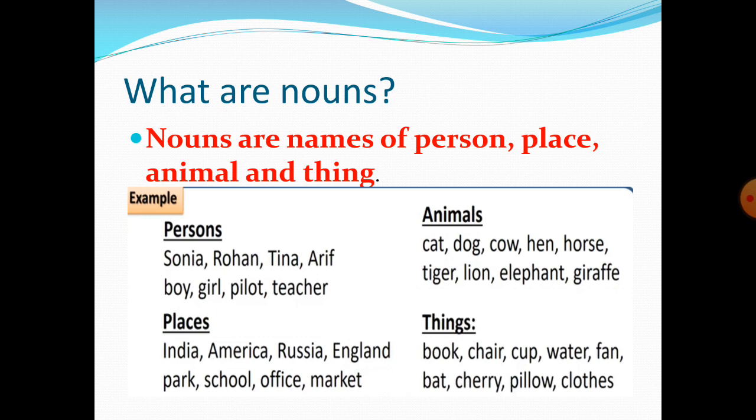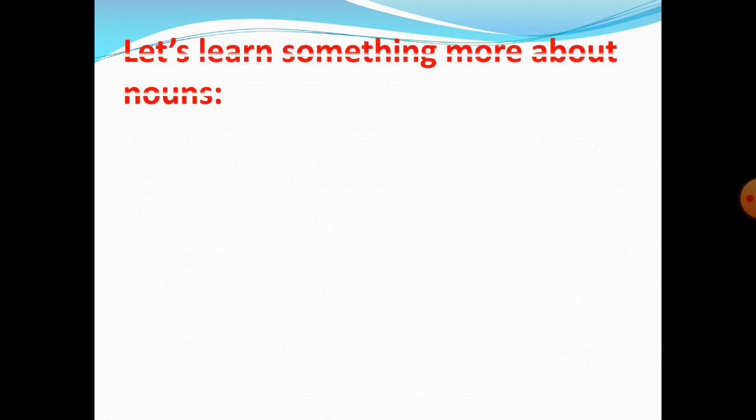Now let's see some examples of things. Book, chair, cup, water, fan, bat, cherry, pillow, clothes — they are the names of things. Now let's learn something more about nouns.